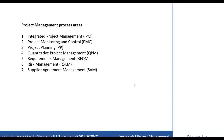The 7 project management process areas are: 1. Integrated Project Management, 2. Project Monitoring and Control, 3. Project Planning, 4. Quantitative Project Management, 5. Requirements Management, 6. Risk Management, and 7. Supplier Agreement Management.